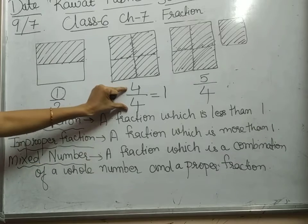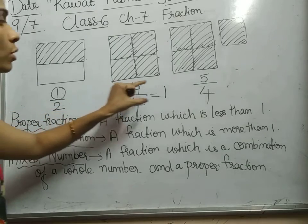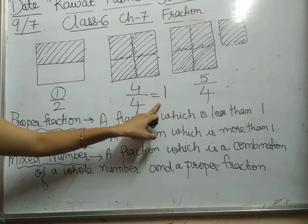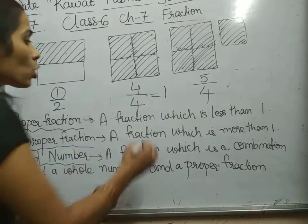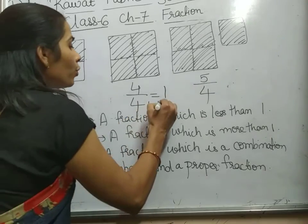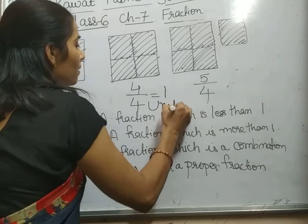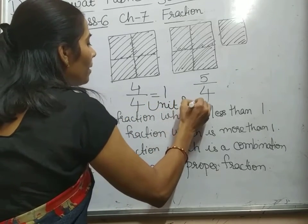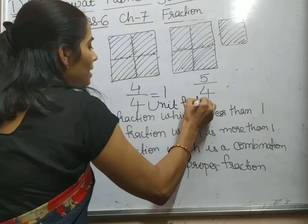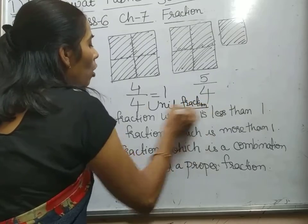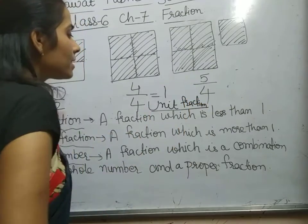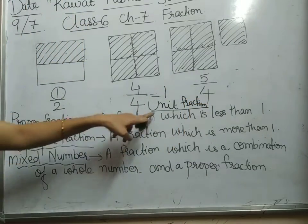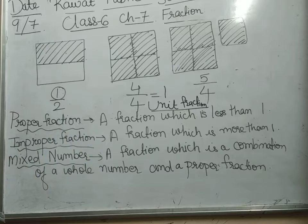Four by one — this kind of fractions whose answer comes out as one, or whose fraction is equal to one, are also called unit fractions.